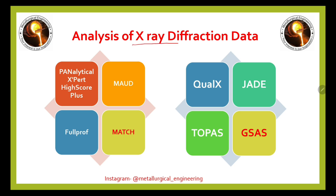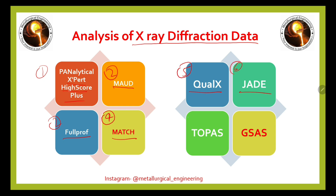First, for X-ray diffraction data, there are eight most-used software tools. First is PANalytical X'Pert HighScore. Second is MAUD. Third is FullProf. Fourth is Match. Fifth is QUALX. Sixth is Z. Seventh is Two-Pass. Eighth is GSAS. These are the eight important software tools you can use for X-ray diffraction data analysis. The most used is PANalytical X'Pert HighScore Plus.